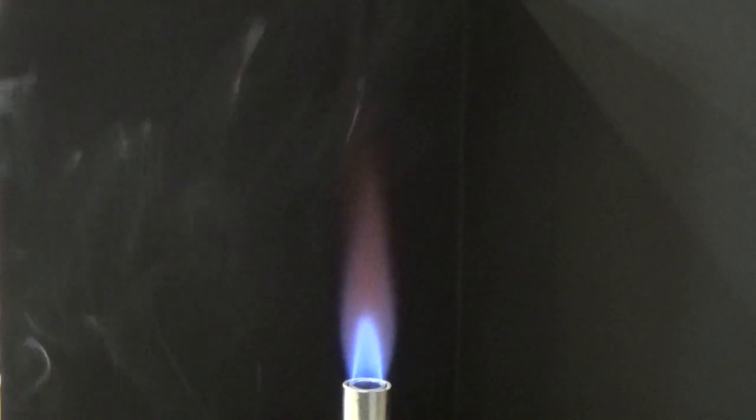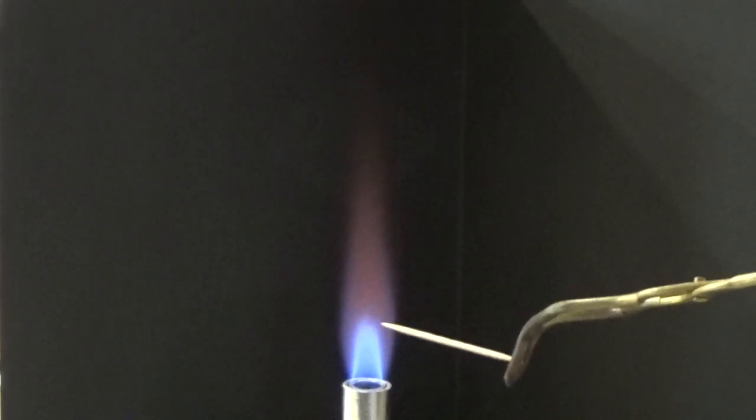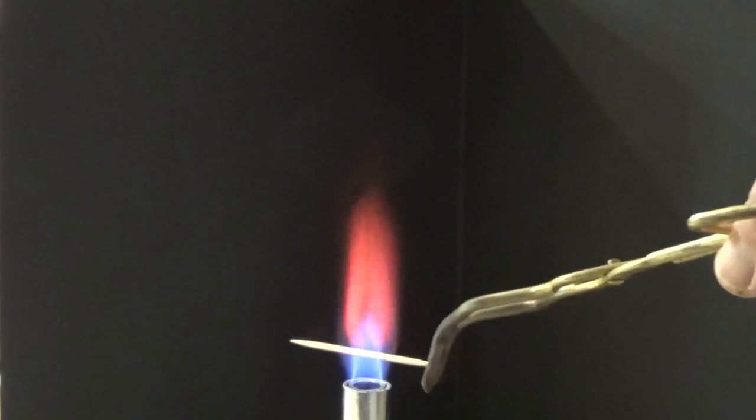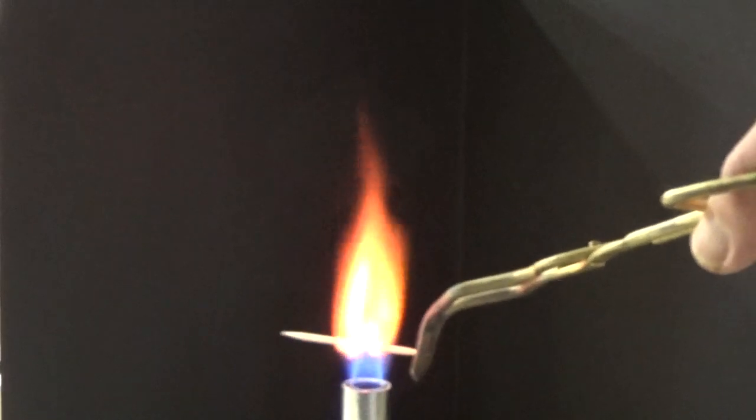Next up, strontium chloride. That technique of putting it low in the flame seems to work best. It gets evaporation of the compound before the wood starts to burn. I'll go with that again. Interesting, that violet, deep red violet color. Fantastic.